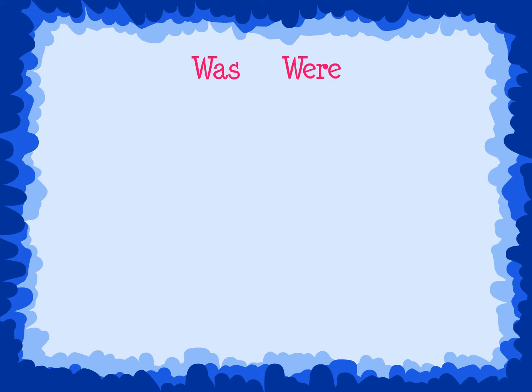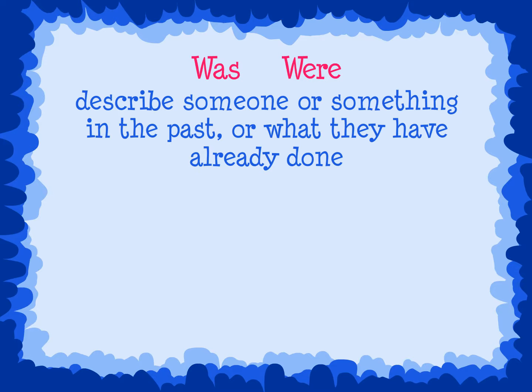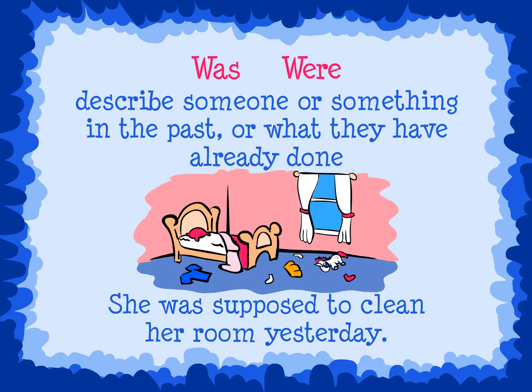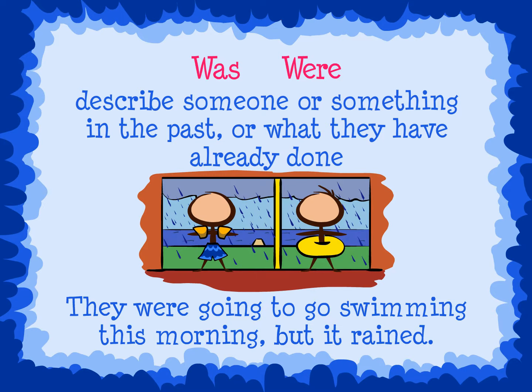Was and were describe someone or something in the past — in other words, something that they have already done. For example: 'She was supposed to clean her room yesterday' — was is the verb. 'They were going to go swimming this morning, but it rained' — were is the verb.